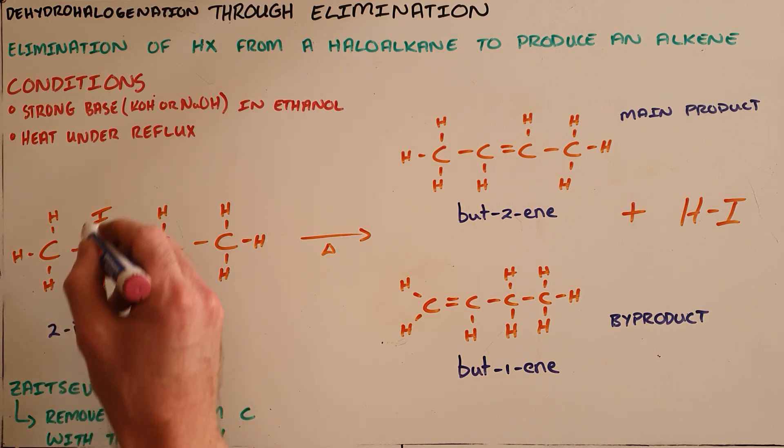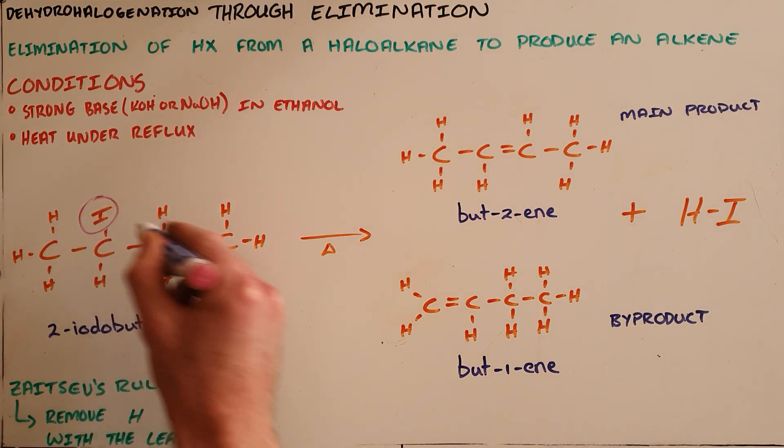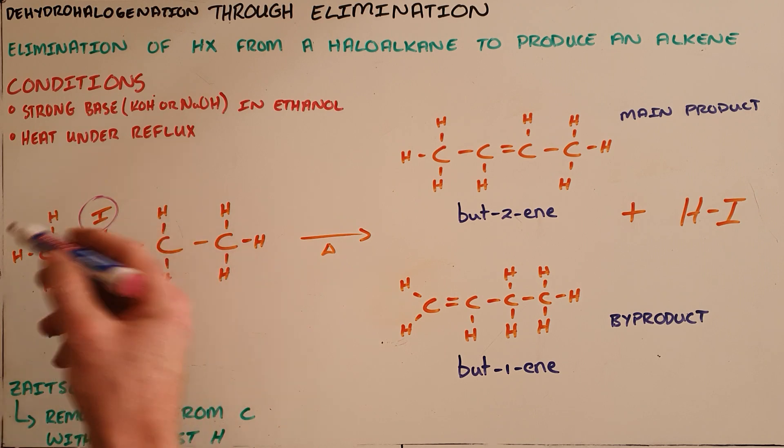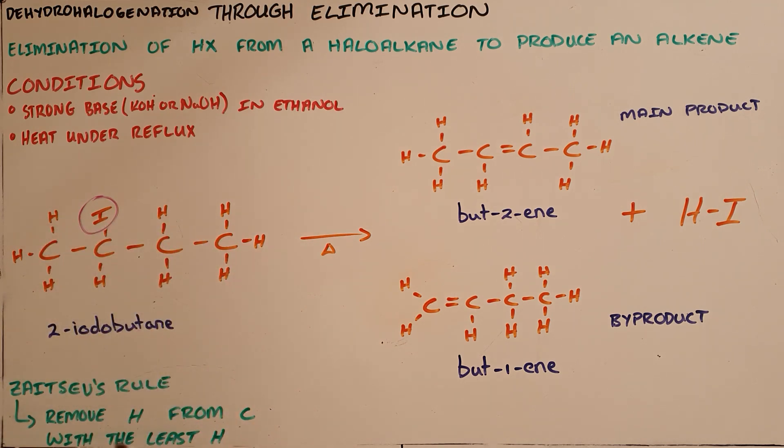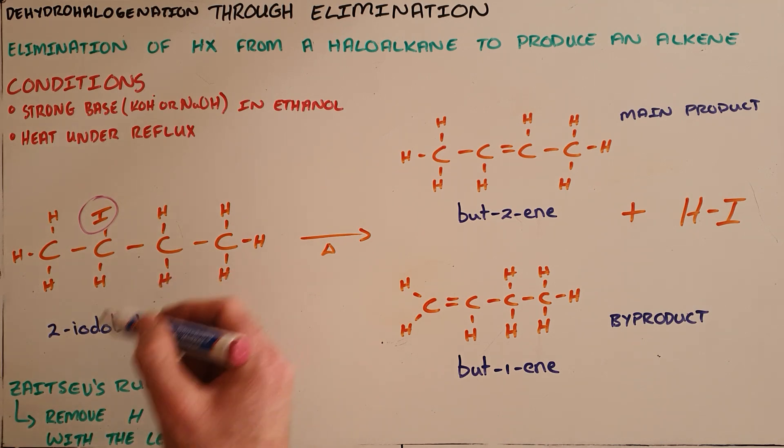We find that we are able to remove an iodine as well as a hydrogen atom, and we use Zaitsev's rule once again to determine which hydrogen atom is removed. Zaitsev's rule tells us that we will always remove the hydrogen atom from the carbon that has the least.